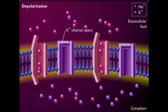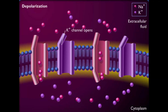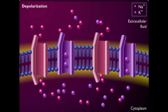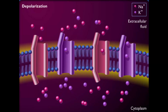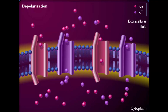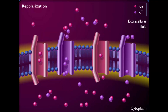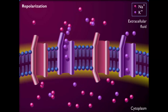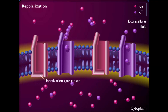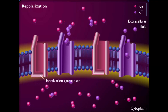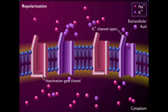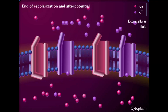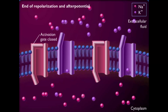Voltage-gated potassium ion channels also begin to open, but more slowly. Therefore, depolarization occurs because more sodium ions diffuse into the cell than potassium ions diffuse out of it. As the membrane potential approaches maximum depolarization, the inactivation gates of the voltage-gated sodium ion channels begin to close and the diffusion of sodium ions decreases. The potassium ion channels remain open and potassium ions continue to diffuse out of the cell.